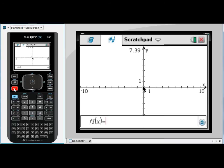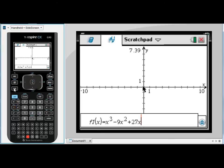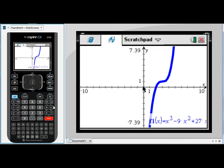I'm going to press tab to open my entry line. This time I'm going to use a cubic. So I'm going to type x cubed minus 9x squared plus 27x minus 26. Enter to graph. You'll see this is a cubic with a point of inflection.